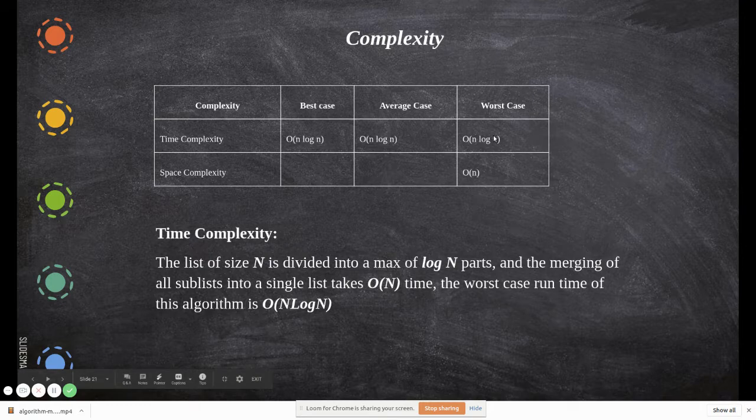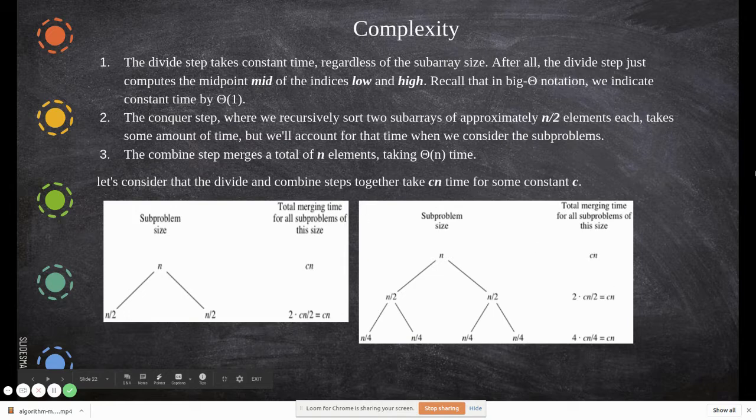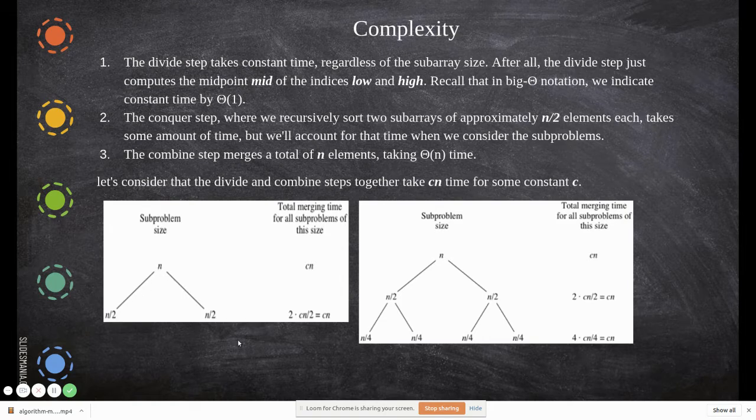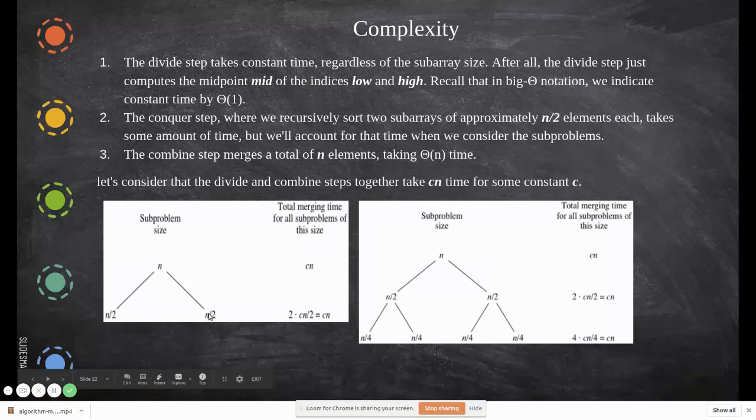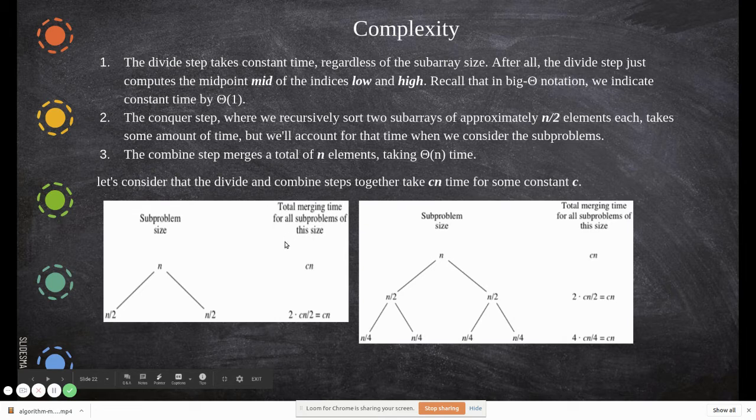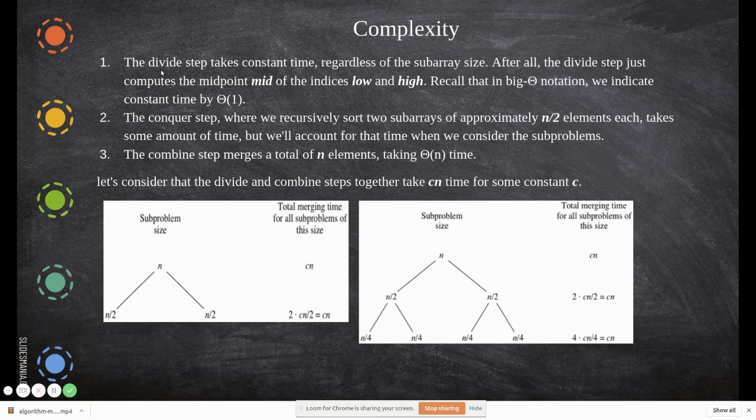The worst case runtime is n log n. Now if you see this complexity, say for example this is the main problem. Let us take n number of elements. Initially they are divided into two exactly, so n by 2, n by 2.